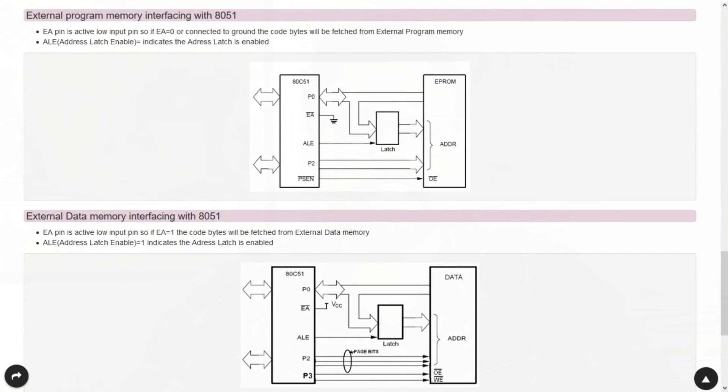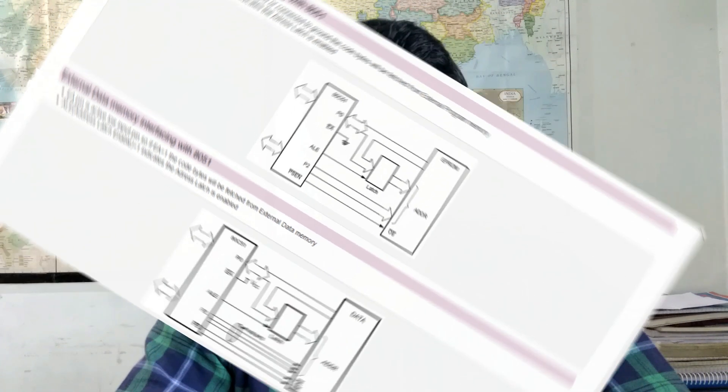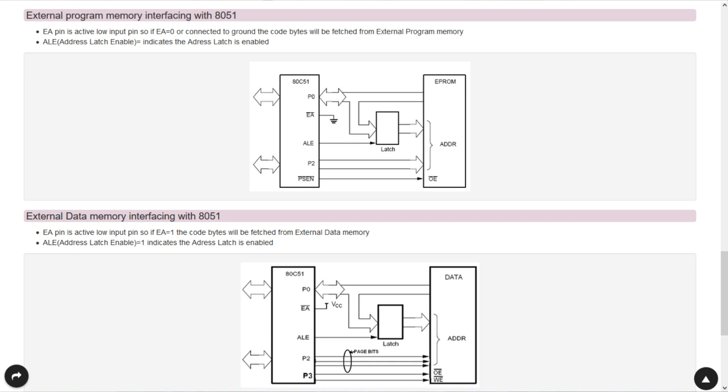In external memory interface we are having three pins: address latch enable, external access and PSEN bar. I will explain all these three pins one by one. First, external access: it is an active low input pin. If EA bar is connected to zero that means your controller is fetching the code from external memory, and if EA is connected to VCC or EA bar is equal to one then your controller is fetching the program from internal memory.